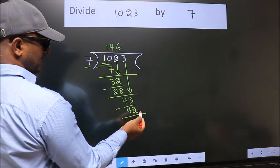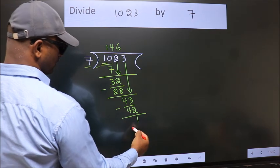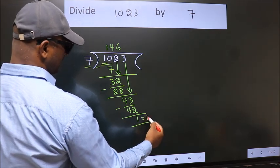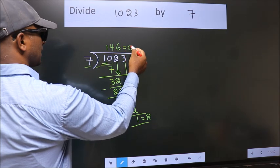No more numbers to bring it down. So, we stop here. This is our remainder. This is our quotient.